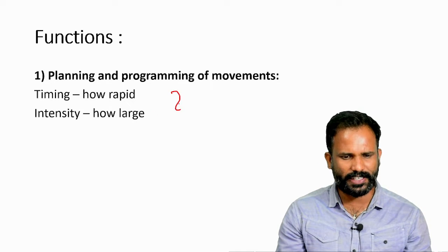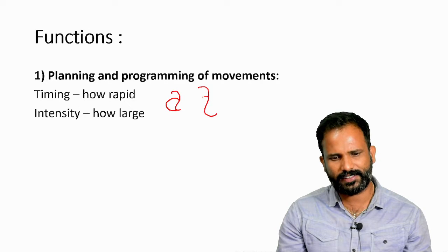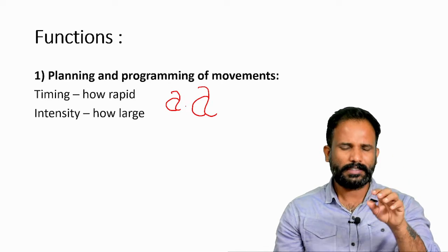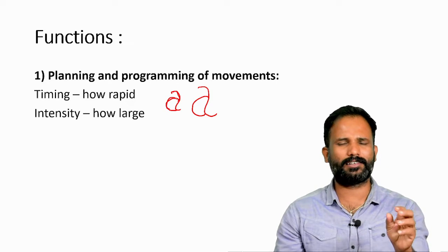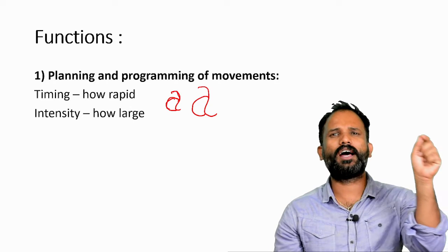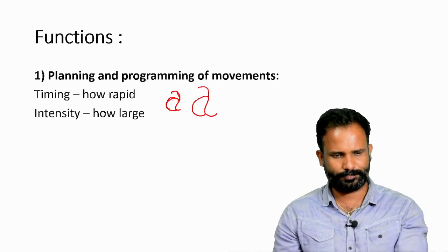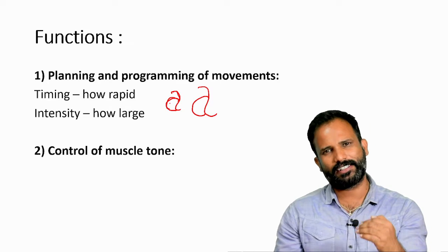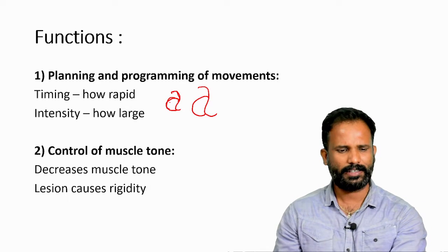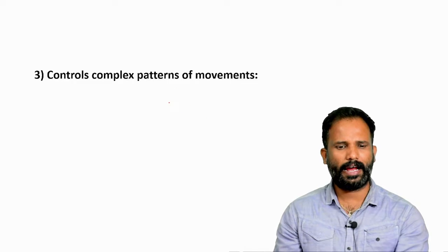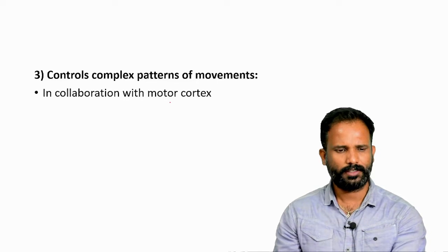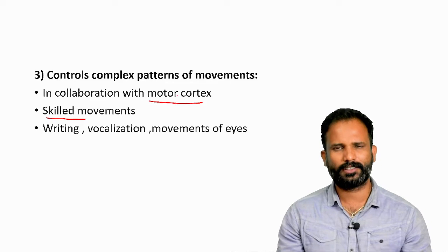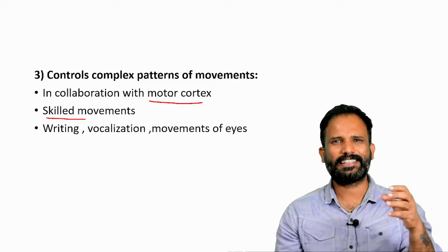Timing refers to how fast the activity should be performed. Intensity refers to how large the movement should be — for example, whether you write a bigger or smaller letter 'A', the proportions remain similar. Basal ganglia also controls muscle tone; it normally reduces tone, which is why lesions of the basal ganglia cause rigidity and hypertonia. It also controls complex patterns of skilled movements in collaboration with the motor cortex.